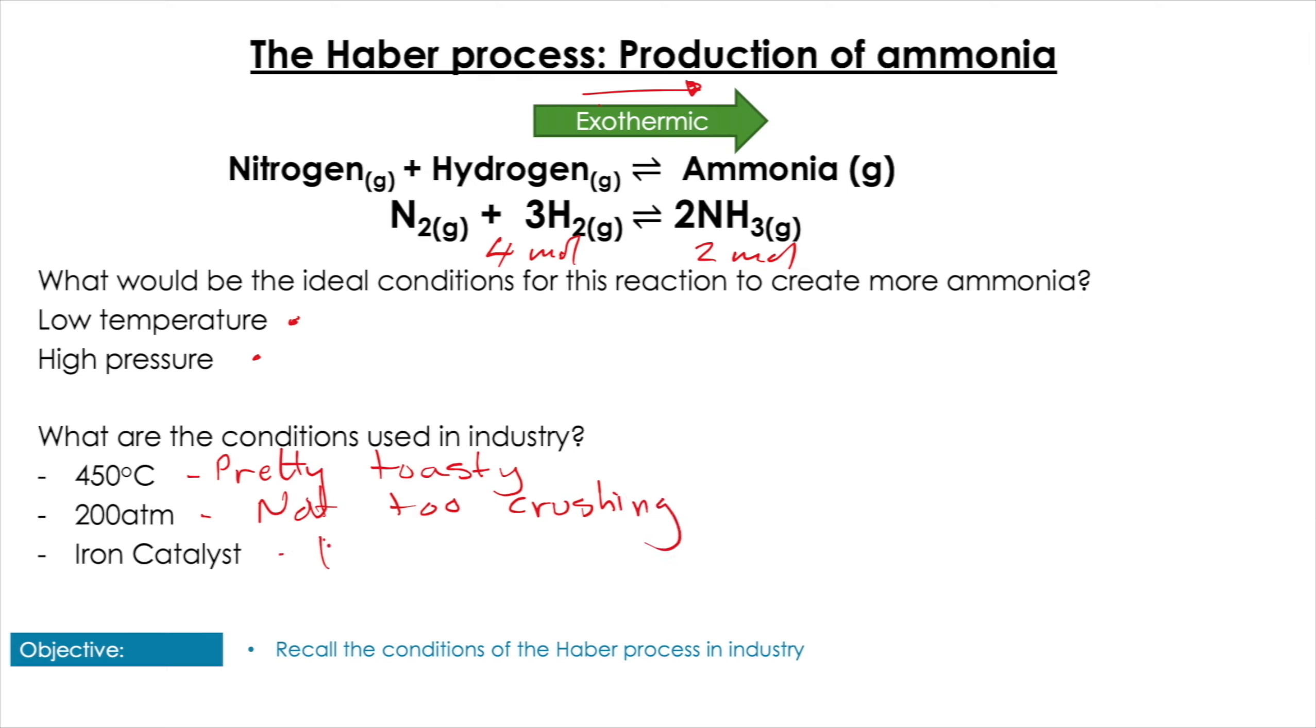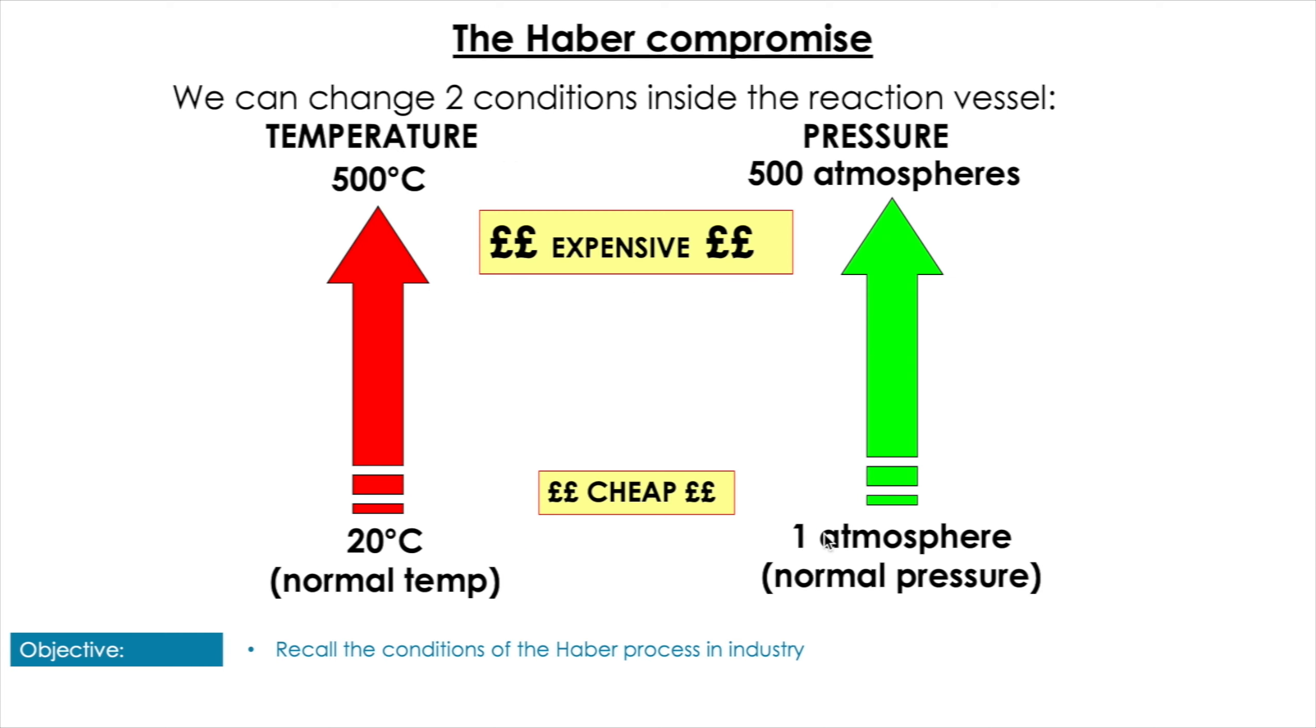The iron catalyst is obviously just along for the ride, increasing the rate of reaction in both directions. So why? The reason for this is because of the Haber compromise. This basically comes from the fact that if you're a captain of industry and you want to earn yourself a lot of money, you want to balance the amount of ammonia that you produce with the cost. Because you don't just want the most ammonia, you want the most profitable ammonia, you want to make yourself some fat stacks. And the best way to do that is to have a balance of cost and output.